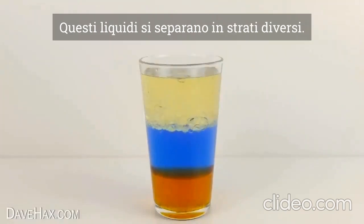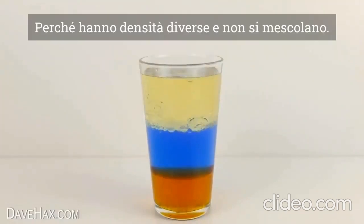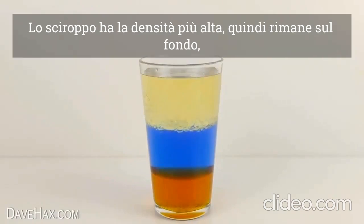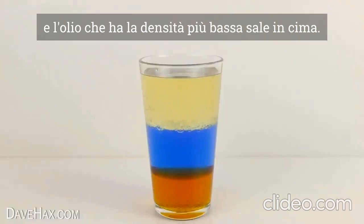These liquids separate out into different layers because they're different densities and they don't mix. The syrup has the highest density so it sits on the bottom, and the oil, which has the lowest density, rises to the top.